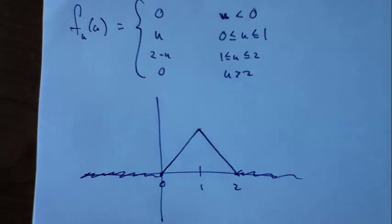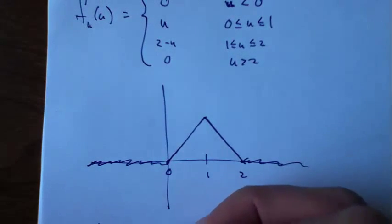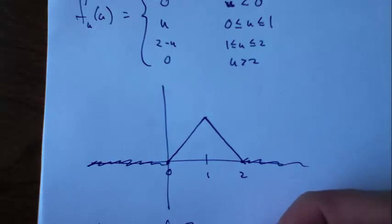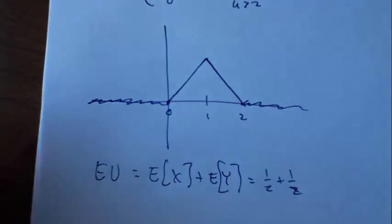By the way, what's the expected value of u? It's 1. Expected value of u is just the expected value of x plus expected value of y, which is a half plus a half, which is 1. And you can see that that's true by the picture there.